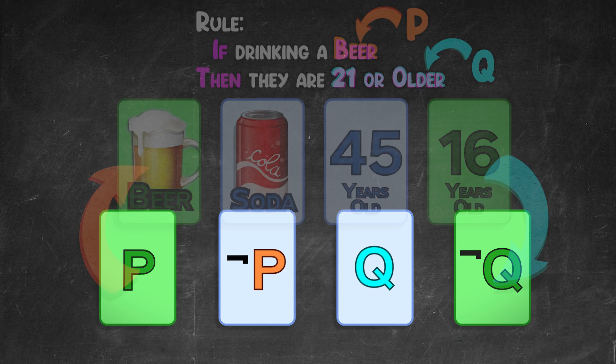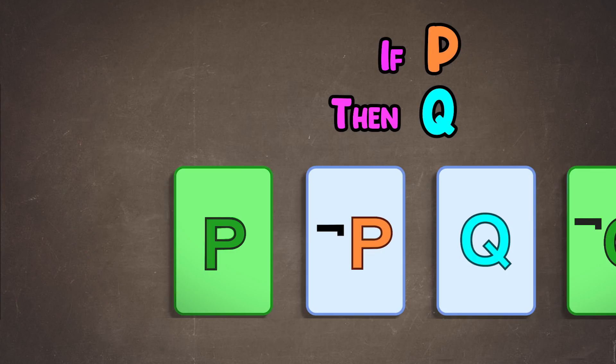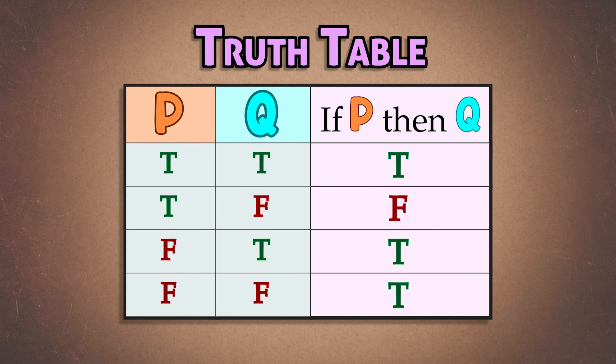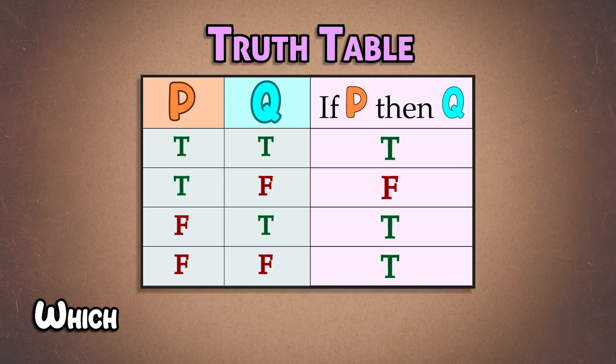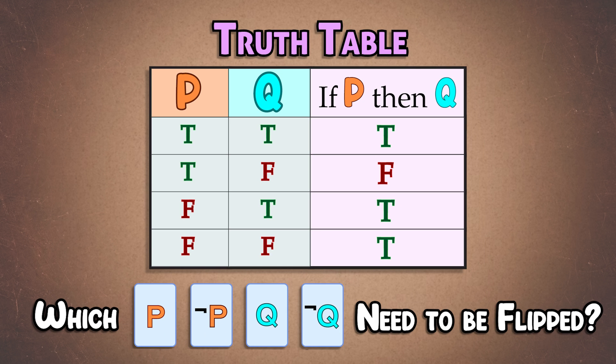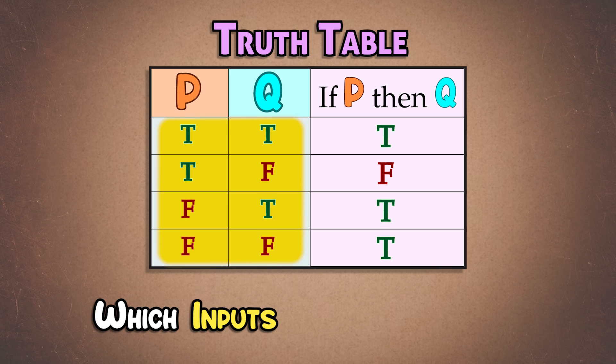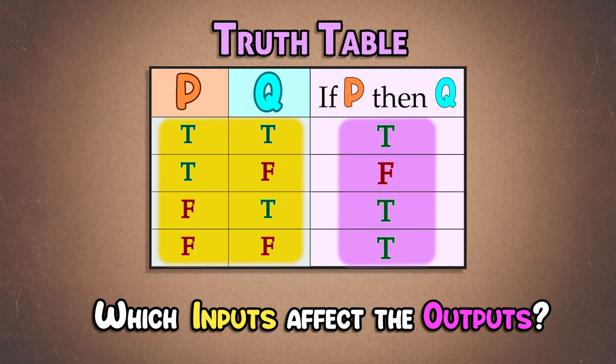This is true for any if P then Q problem, as shown by this truth table, a table that shows all input possibilities along with their corresponding truth value for the output if P then Q. For example, if P is true and Q is true, well then the rule if P then Q is true. If P but not Q, then false, and so on. Asking which cards you need to flip over to verify the rule is equivalent to asking which of these inputs affect the outcome of the truth value.